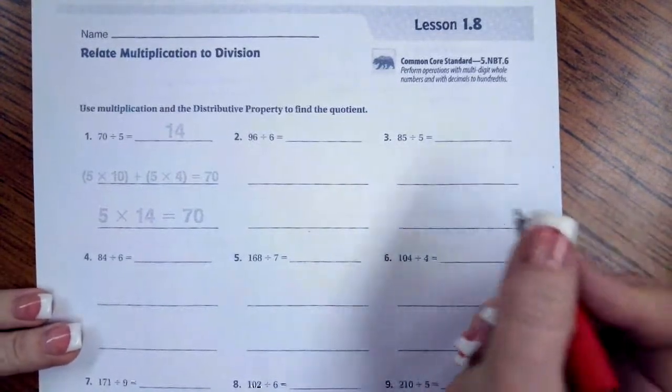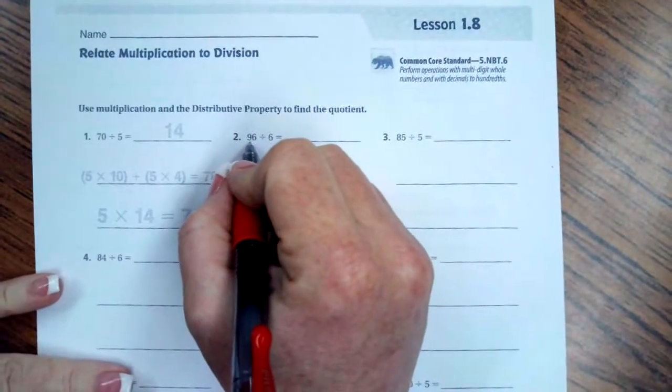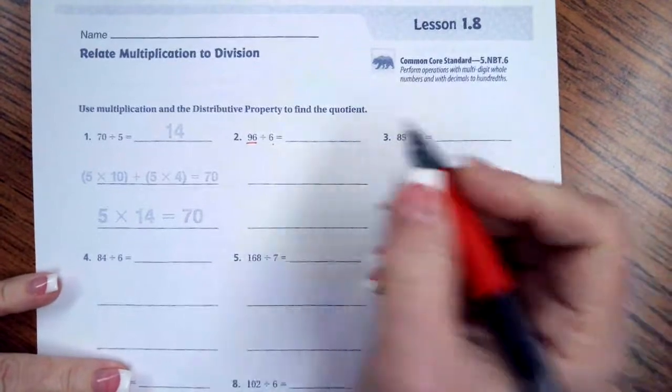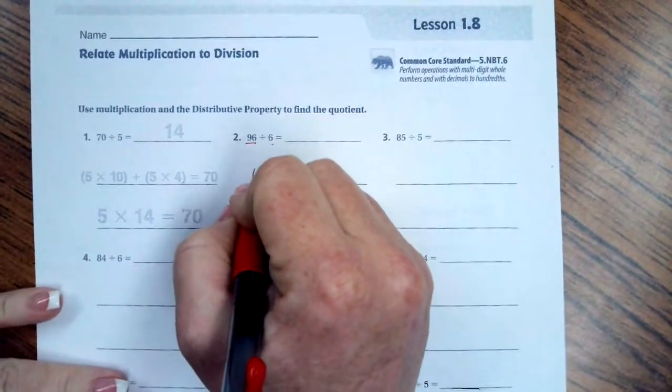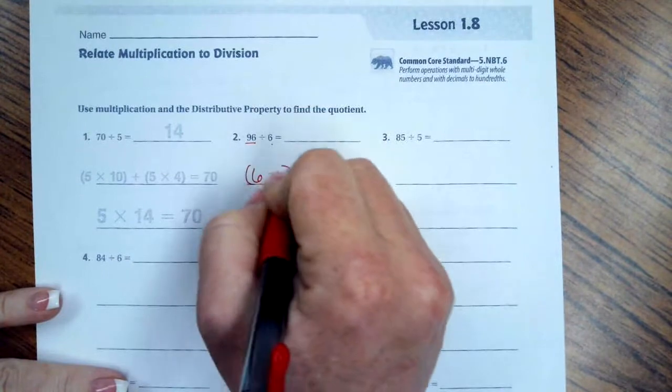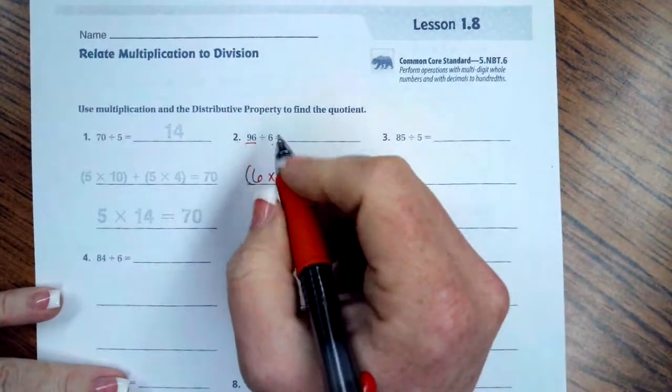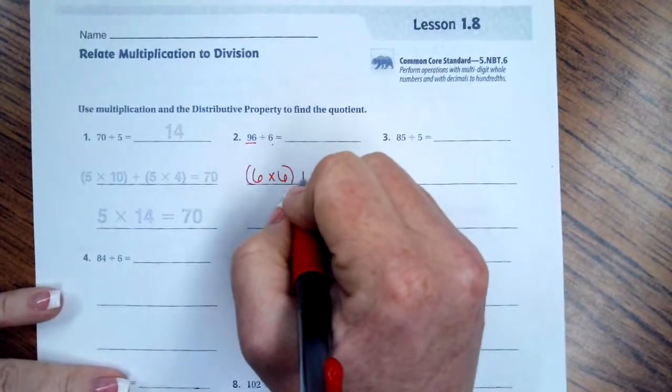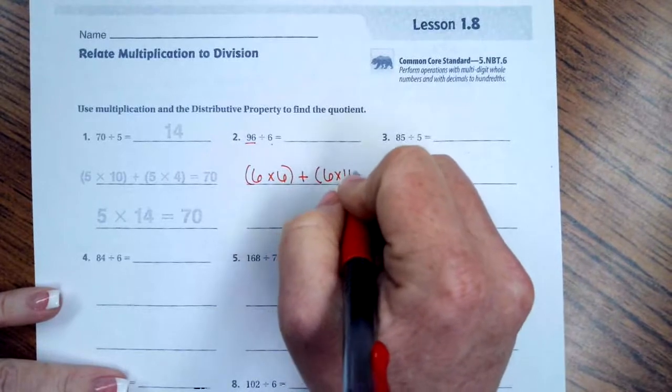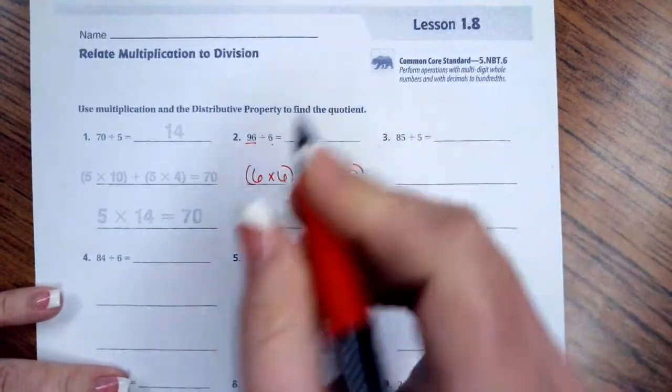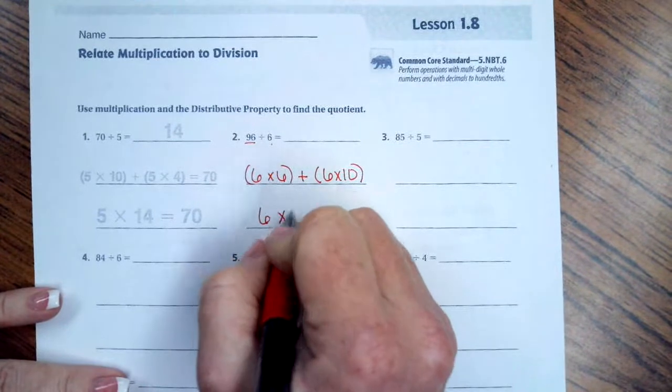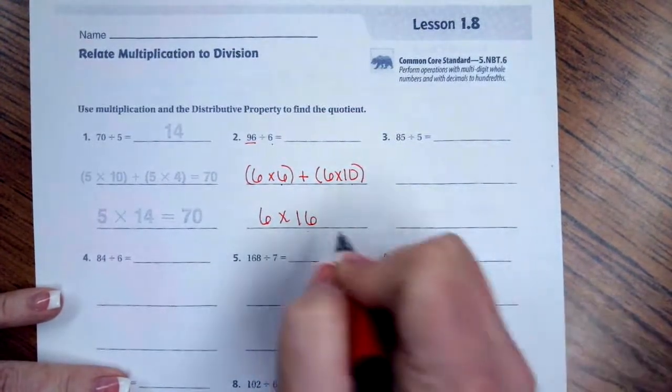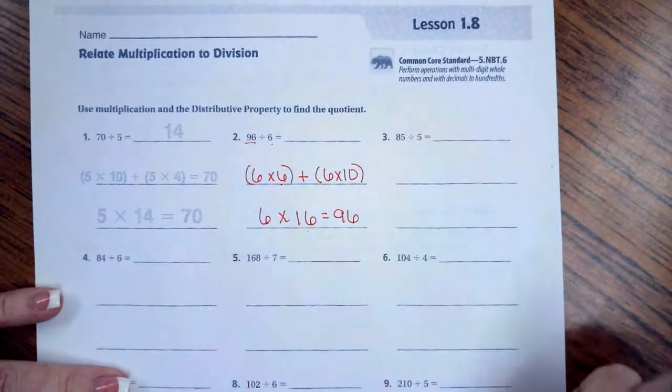We are going to break apart 96 into numbers that are easily divisible by 6. So 96, if I did 6 times 6, that would give me 36. 96 minus 36 leaves me with 60. Well 6 times 10 is 60. So now I have 6 times 6 plus 10 is 16 equals 96.